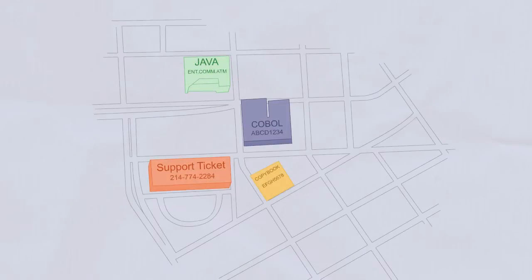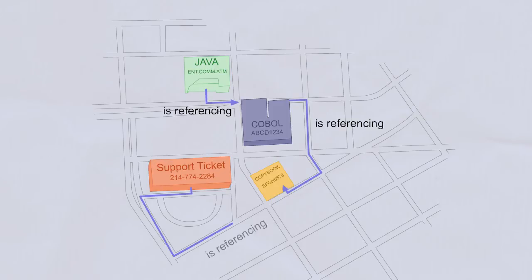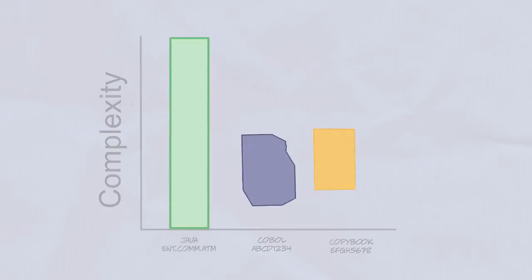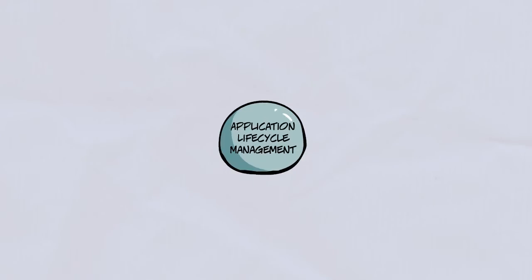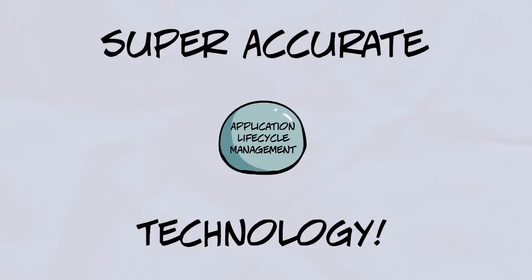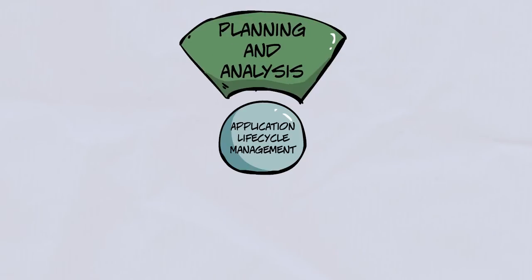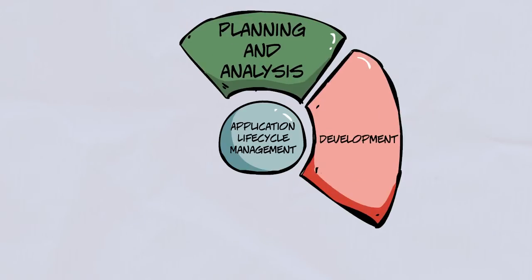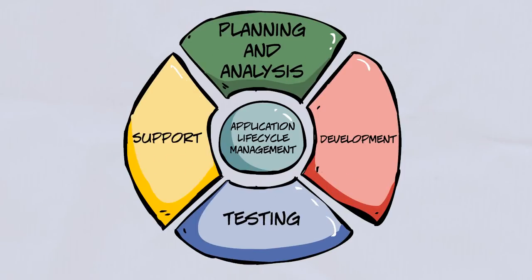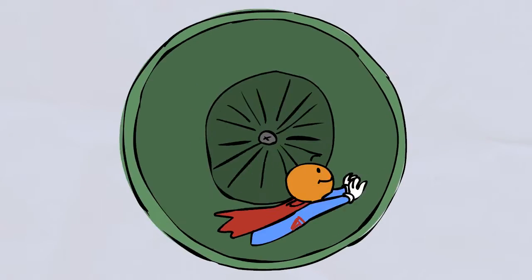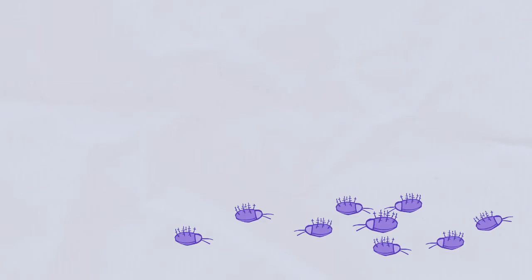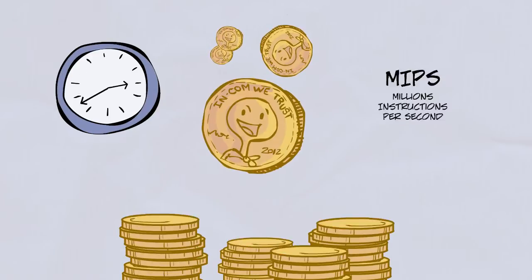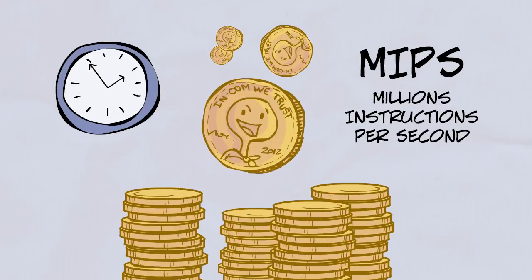Searches billions of lines instantly. Finds links and connections across all loaded information. Understands the complexity and impact for accurate LOE. Plus, its patented, super accurate technology makes application planning and analysis, development, testing, and support a breeze — which translates to way less bugs, production issues, and downtime. Saving time, money, and MIPS, and increasing productivity.